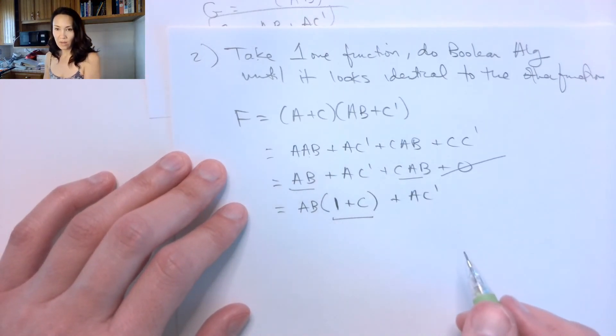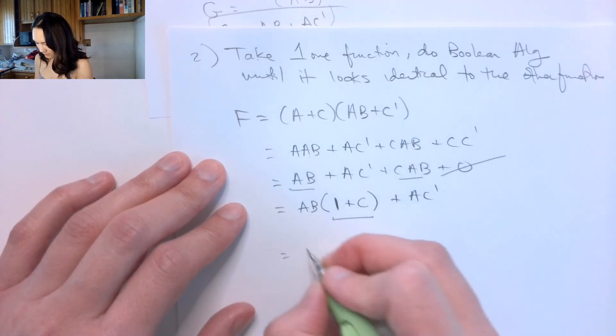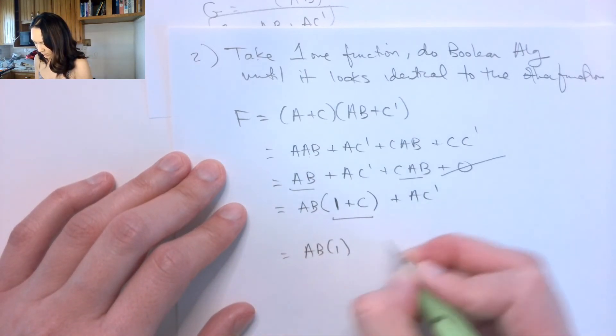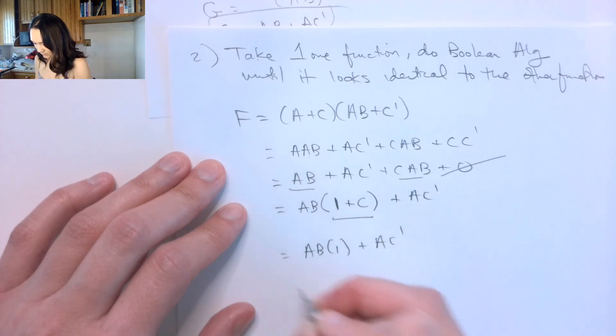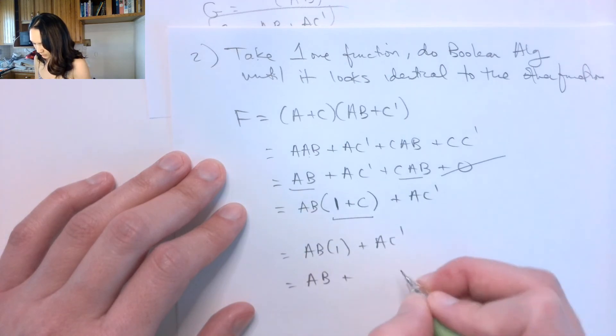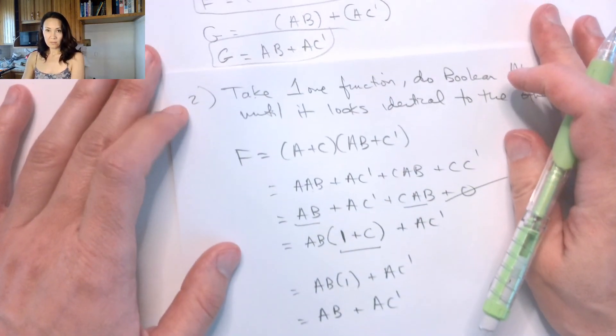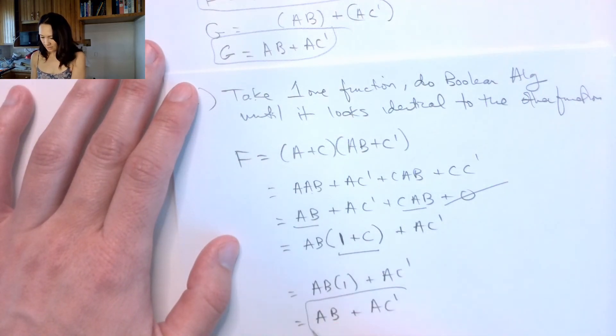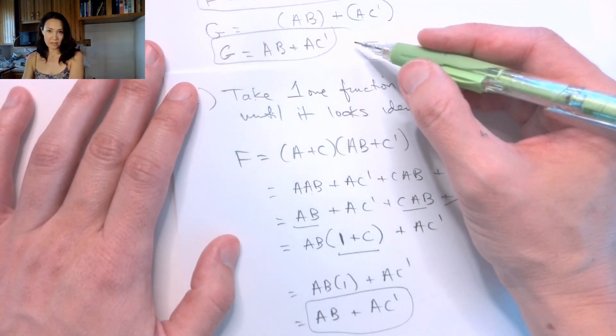Now the simplification I can make is this: anytime you OR something with one, you just get one. So this is AB AND'd with one OR AC'. So anything AND'd with one is just going to be the original anything. So this gives us AB + AC'. And if I look up here, this is exactly the G function.